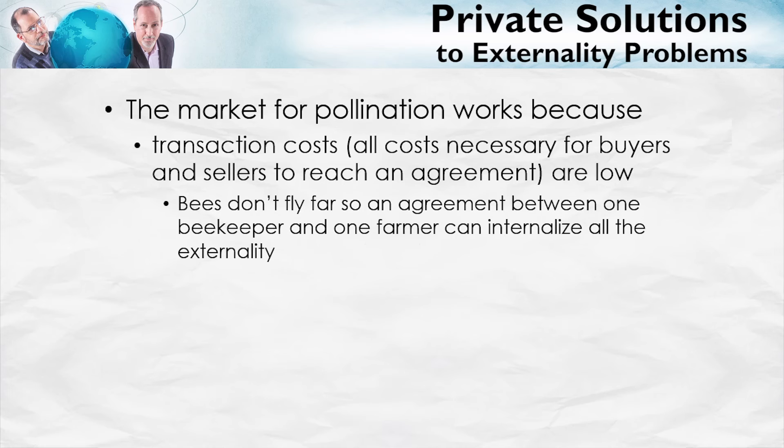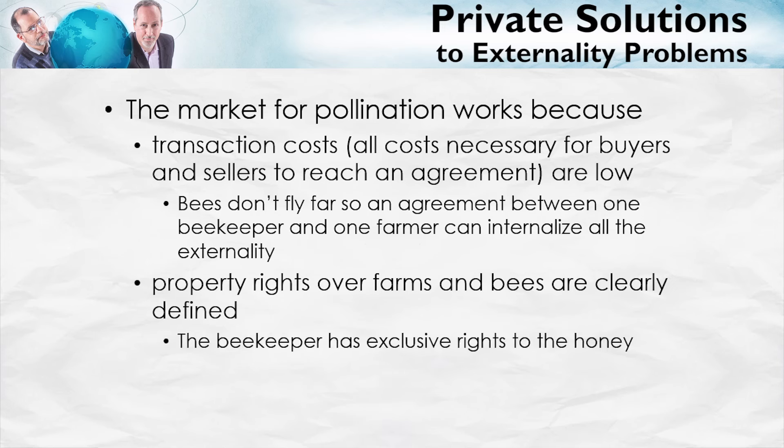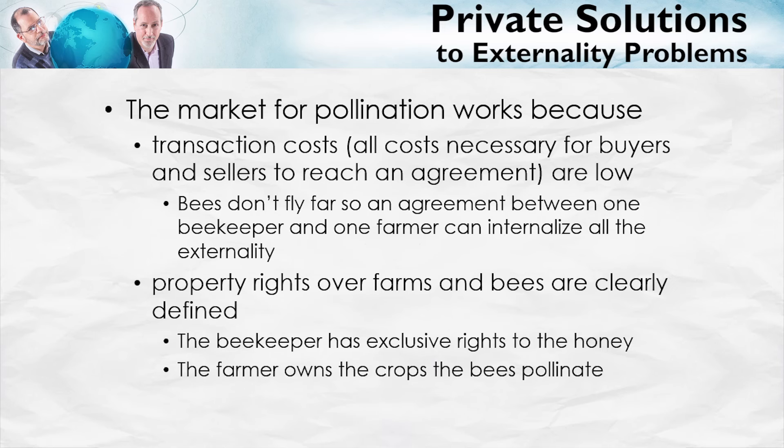An agreement between one beekeeper and one farmer can internalize all the externality. That is, if the beekeeper puts his bees in the middle of the farm, basically, the only crops which are going to be pollinated are the crops of that single farmer. So, once an agreement is made between that beekeeper and that farmer, all of the externalities have been internalized. There are no bystanders once the beekeeper and the farmer make an agreement.